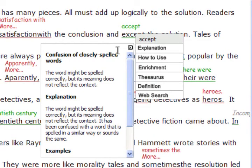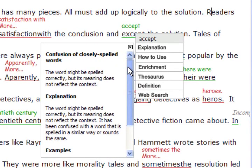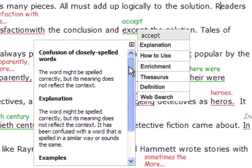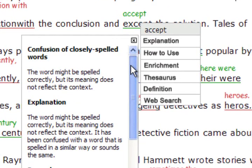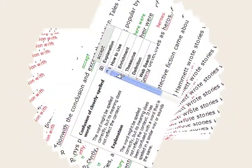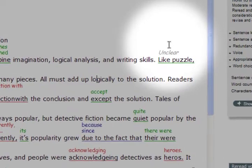This explains the type of error, provides examples, and more. In this case, RightClick explains that 'accept' and 'except' are often confused and explains when each should be used. Gray annotations indicate structural errors like fragments or run-on sentences.